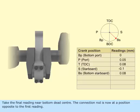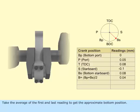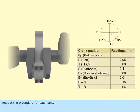The connecting rod is now at a position opposite to the first reading. Take the average of the first and last reading to get the approximate bottom position. Repeat the procedure for each unit.